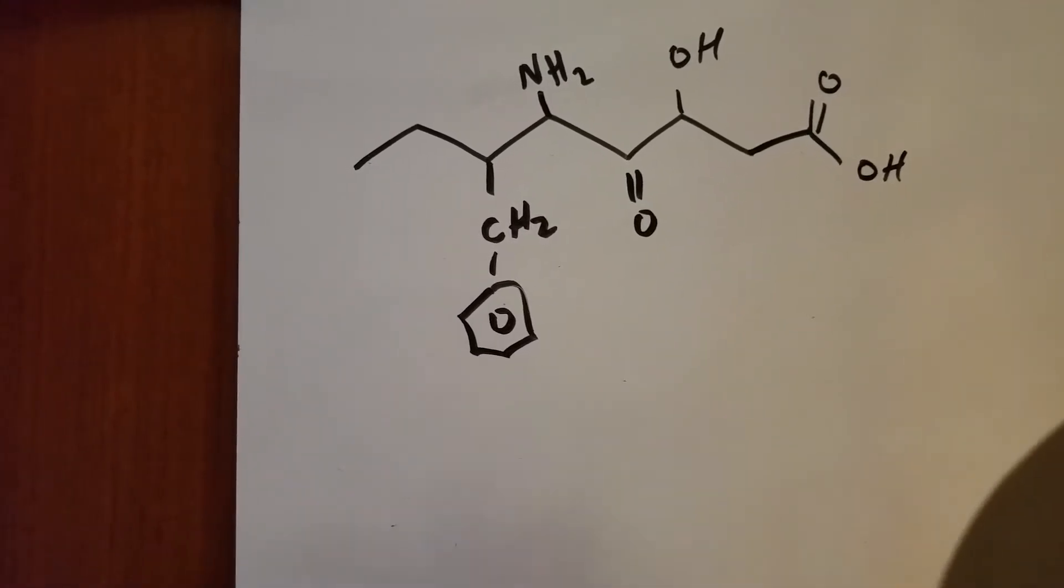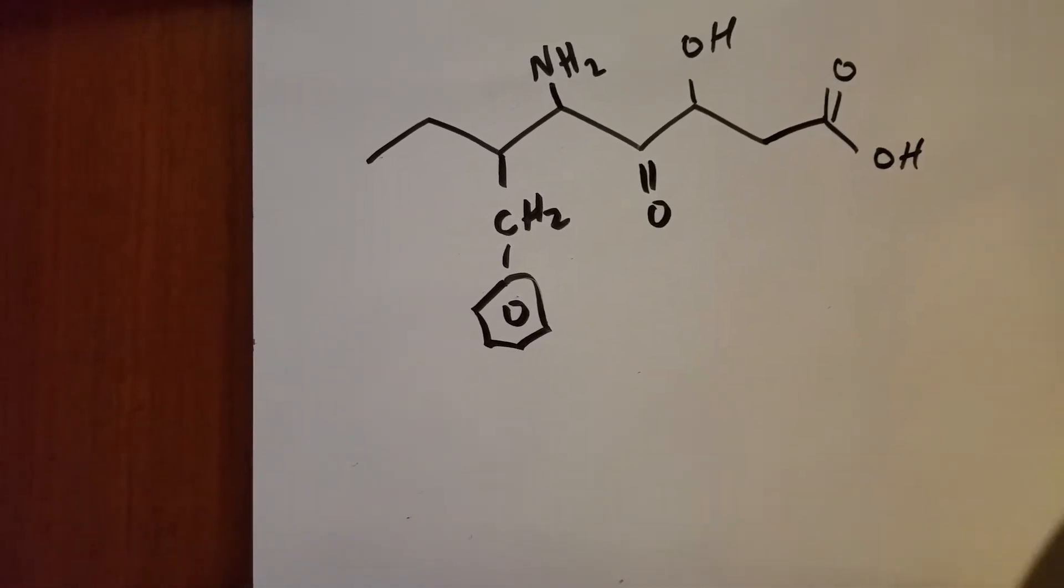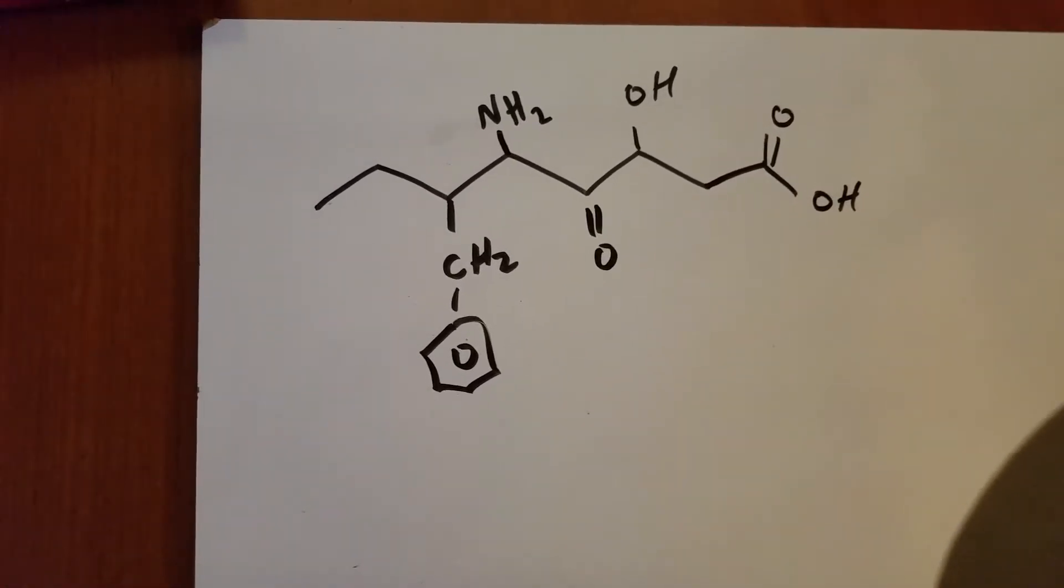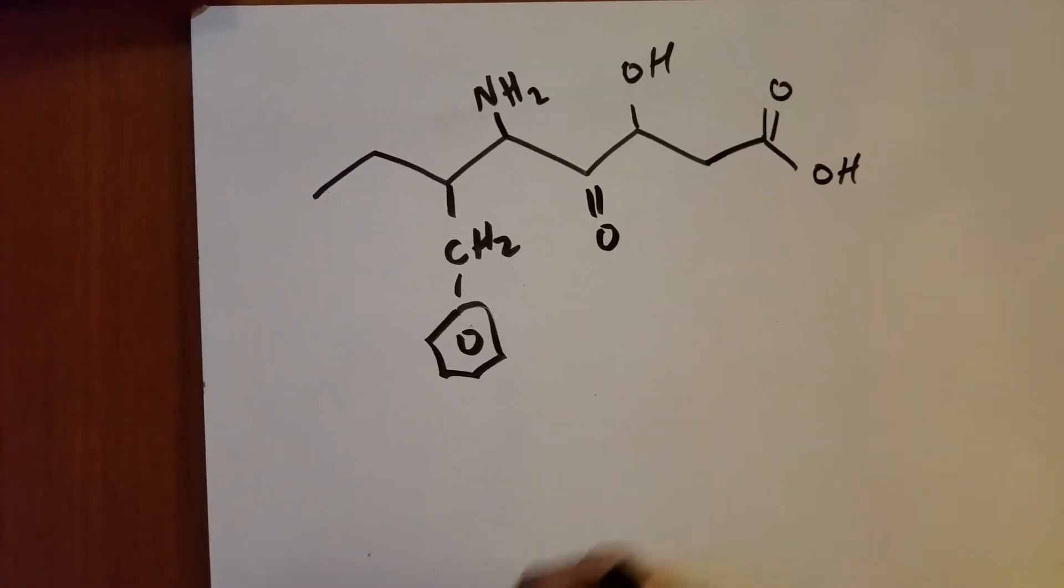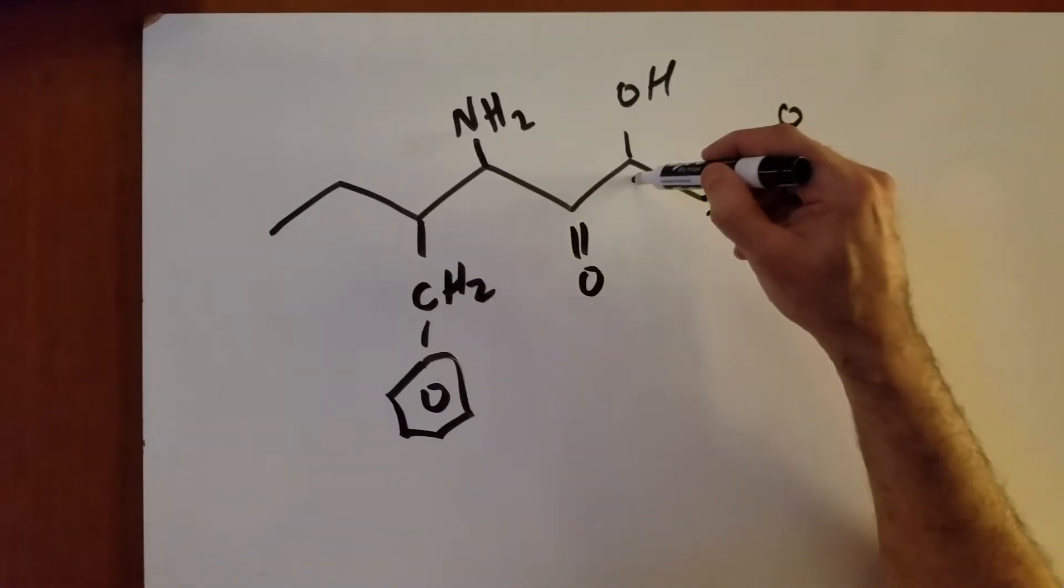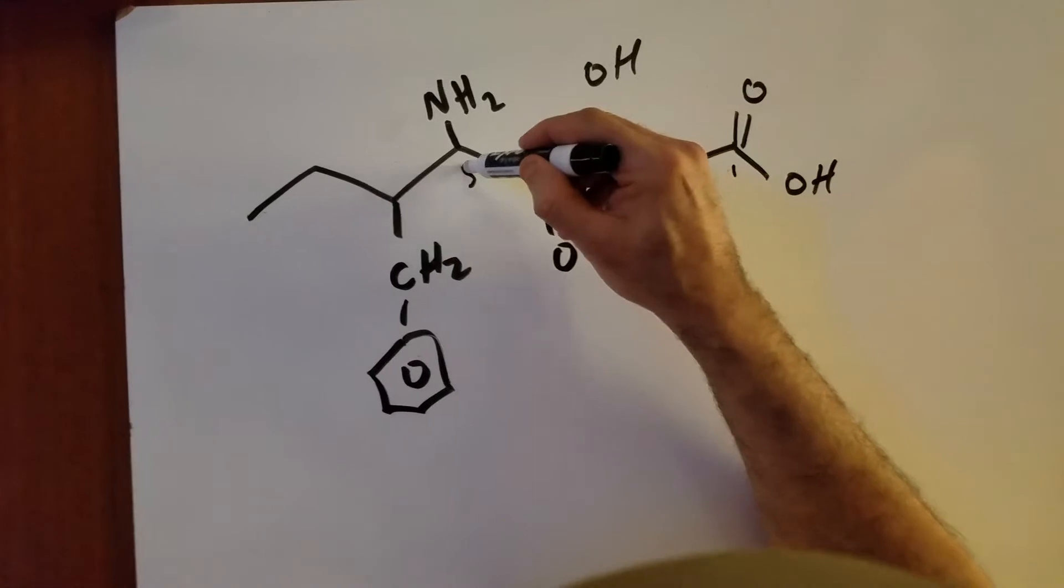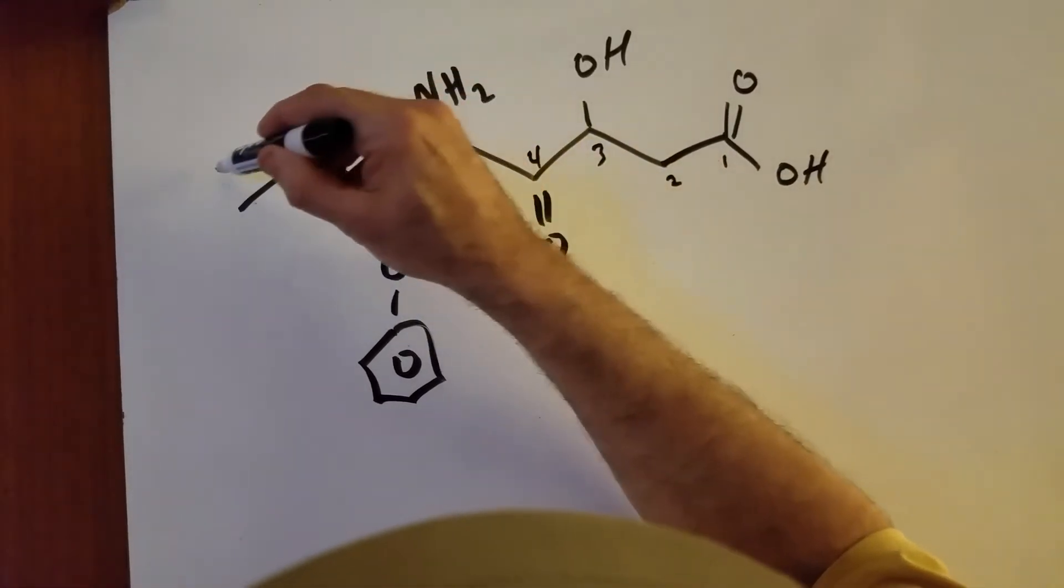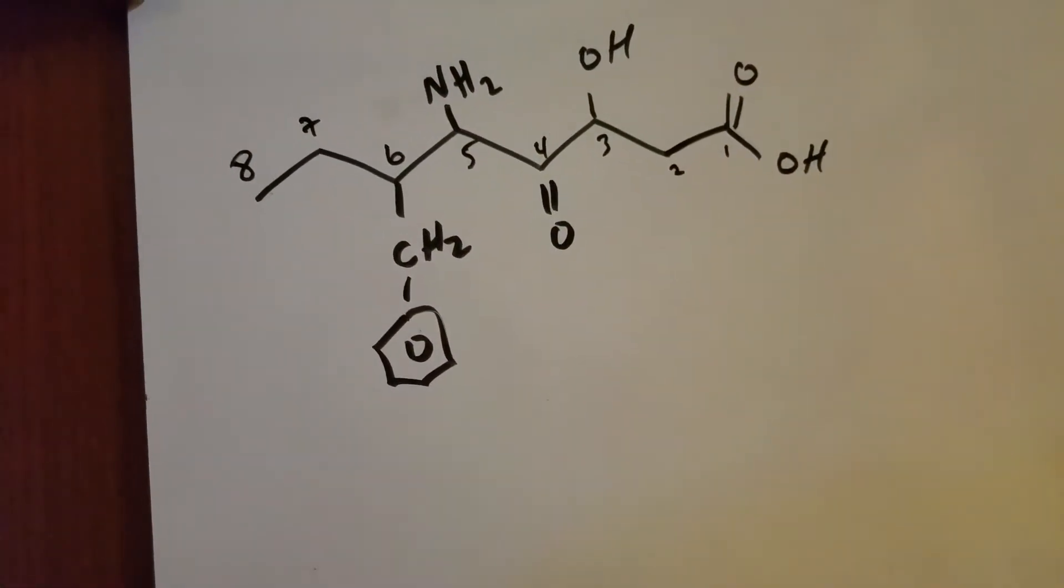The first thing we've got to never forget is the carboxylic acid has the highest priority of all the functional groups you'll ever likely see in your entire life. So what I'm going to do is I'm going to call this 1, 2, 3, 4, 5, 6, 7, and 8. Now we know it's an octanoic acid.